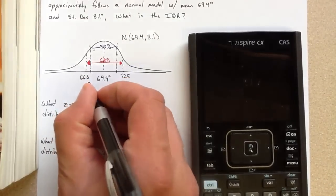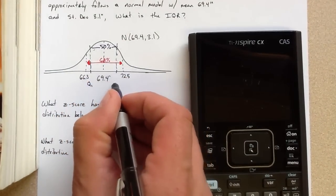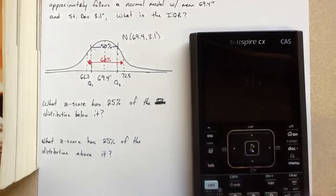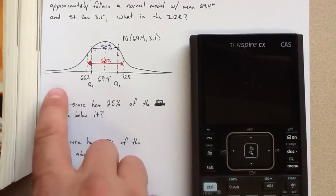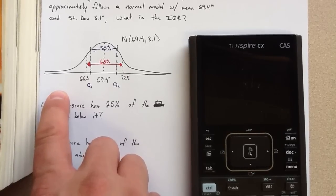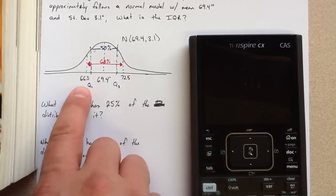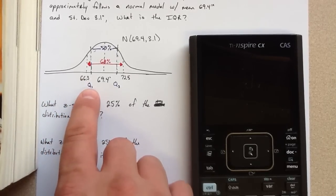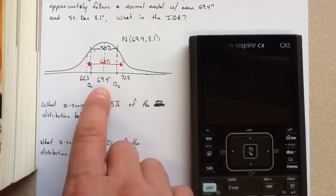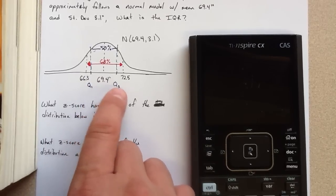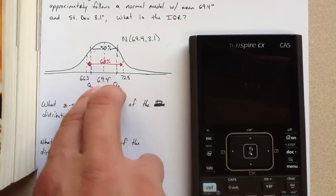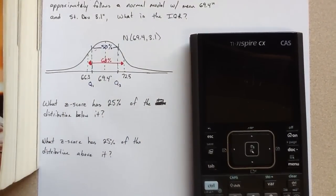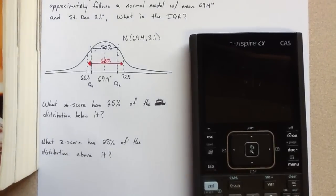Now, this height happens to be at Q1, and this height would be at Q3, quartile 1 and quartile 3, because the quartiles divide the data set, or divide the distribution into four equal parts. So 25% of the data would be here, 25% from Q1 to the middle and the median, and then 25% from the median to Q3, and then 25% above. So this would give us the middle 50%. But how do we find Q1 and Q3?